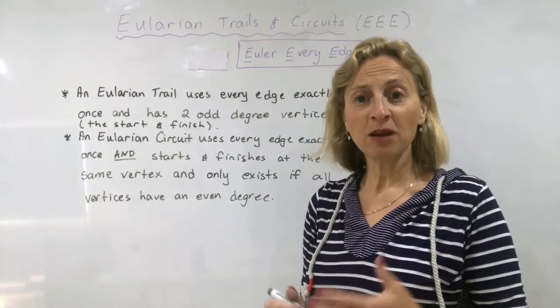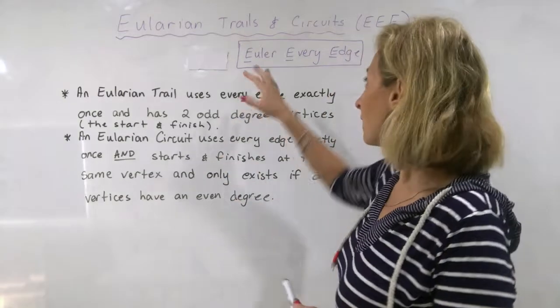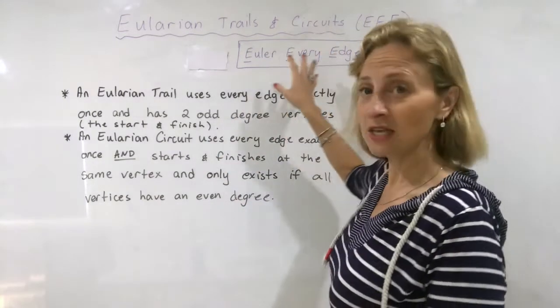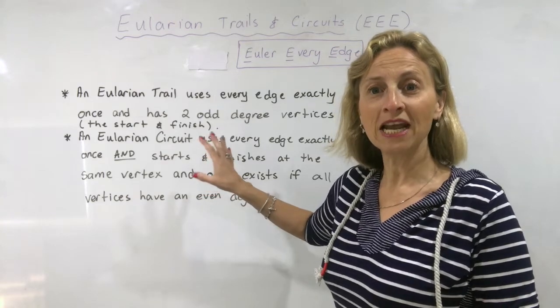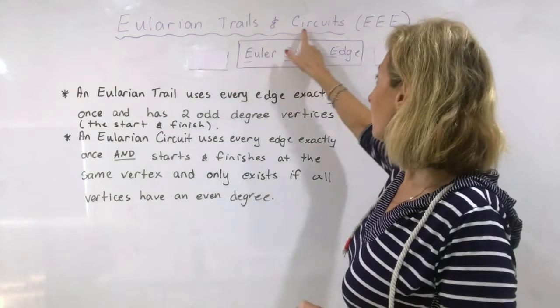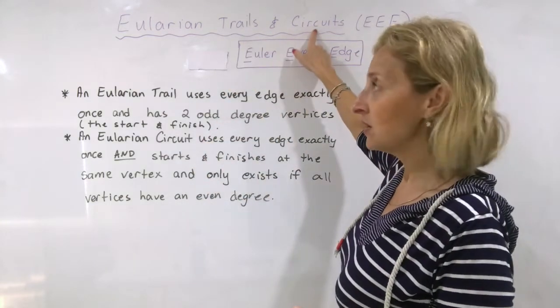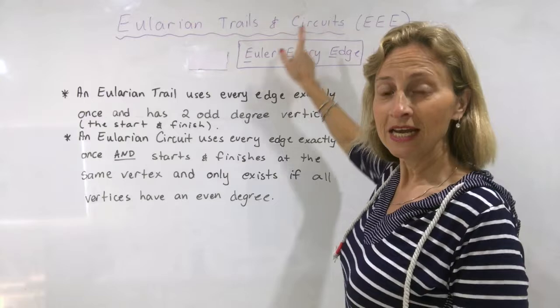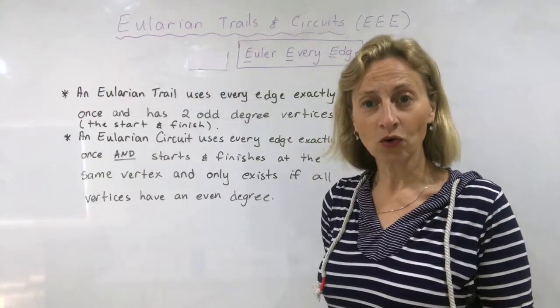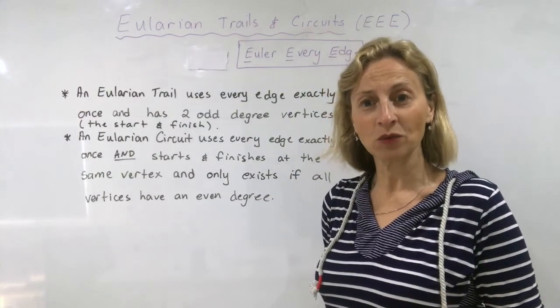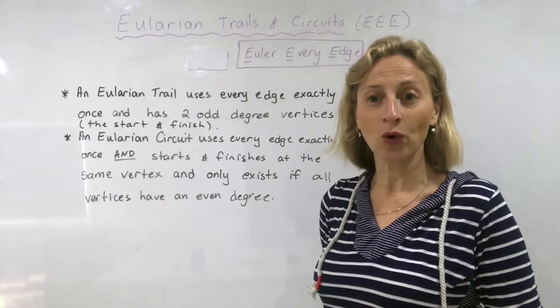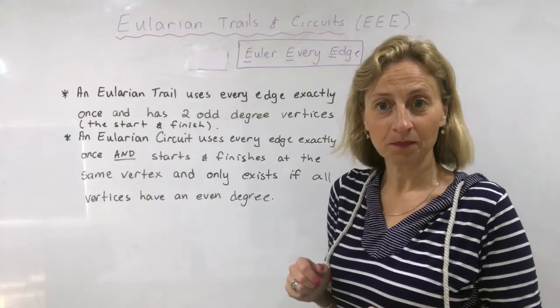There are special types of trails and circuits and we're going to study one called the Eulerian Trail and Eulerian Circuit. It is pronounced Eulerian, not Eulerian, because the man who it's named after was Leonard Euler. So we say Eulerian Trail and Eulerian Circuits.